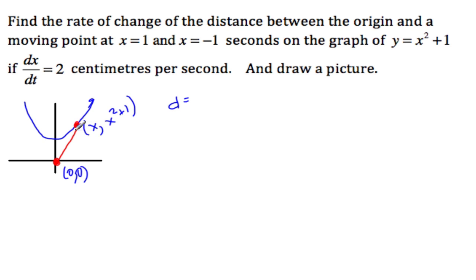So the distance formula you should know is you take the x values and subtract them. So x minus 0 is x, and then square it, plus the y values, subtract them, and then square it. So we'll get (x² + 1 - 0)².